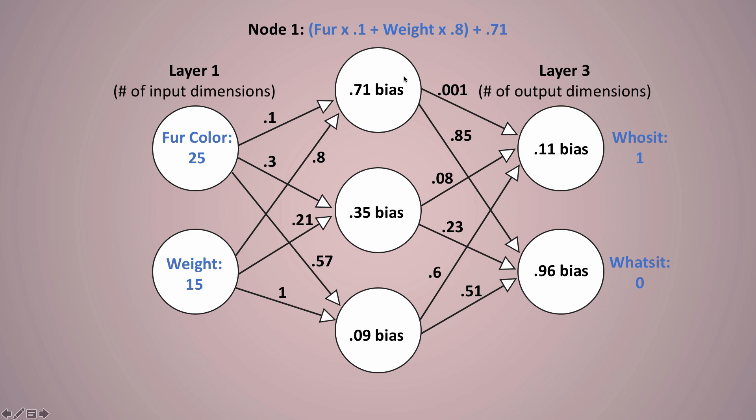So here we go. Node one gets fur times 0.1 plus weight times 0.8. So we have our 0.1 weight and our 0.8 weight. And then we're going to add the 0.71 bias. So that's node number one. So we're basically saying let's randomly guess how these two nodes affect our outcome. Let's just start with a guess. And then we're going to do that for each node, a completely different set of weights and biases here, a completely different set of weights and biases here. You can see when we get down here, we're taking fur times 0.57 plus weight times one, and we're adding a 0.09 bias. So we're basically making a random set of guesses.